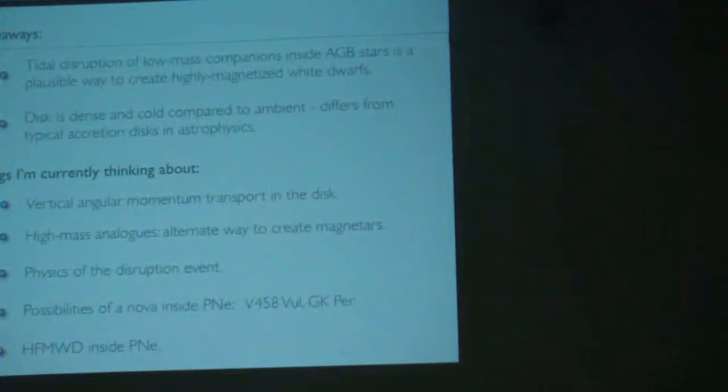The takeaways basically are that this tidal disruption of low mass companions inside the AGB stars themselves could be a plausible way to create highly magnetized white dwarfs. The disc is dense and cold compared to the ambient, which differs from the typical accretion disc you see in astrophysics. Things I'm currently thinking about: vertical angular momentum transport in the disc. Is that possible as a hydrodynamic mechanism to transport angular momentum without really magnetic fields?